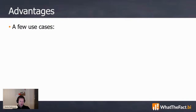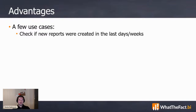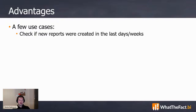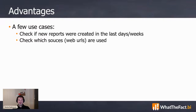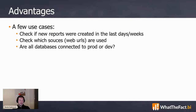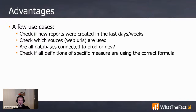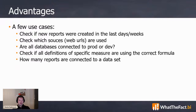There are a few more examples of what you could use this for. You can check if there were new reports created in the last days, weeks, or months — you really get an idea about the activities in your tenant. You can check the sources that are used: which web services, URLs, which folders are used. You can see if all your databases are connected properly to your productive environments or if someone forgot and the database is still pointing to dev. You can check that your specific formulas and measures are set correctly. You can also check the lineage — how many reports are connected to a specific dataset. This is also available within Power BI itself, but it's also available here in the Scanner API. You have really a lot of possibilities for analysis.